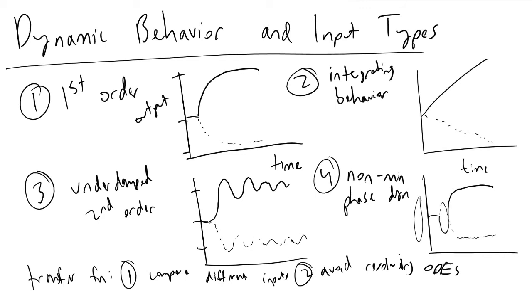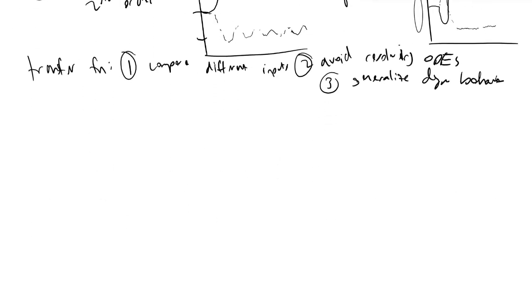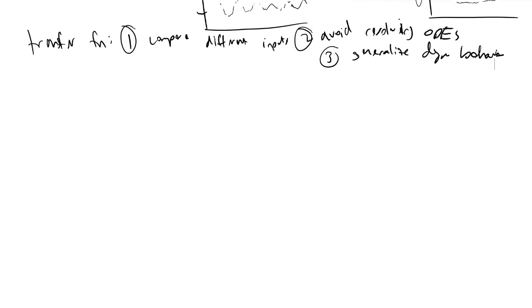Finally, the last reason we care about transfer functions is that it allows us to generalize this dynamic behavior and observe what type of these four cases I've just introduced we should expect in our transfer function. So to get to the actual input types that we have in process control, the first thing we have is the one we're most familiar with. It is the step input.